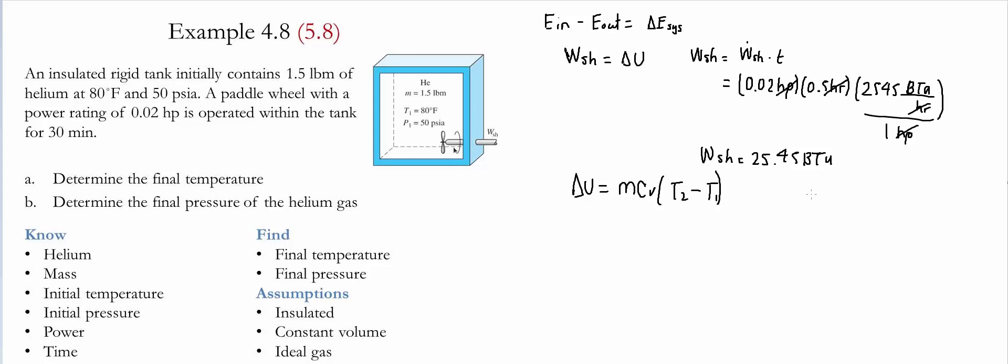The information that is provided, we have a mass of 1.5 pound mass and the value for Cv in this particular case. If we go to the table, we find it to be 0.753 BTU pound mass rankine. So if we make these two values equal to each other and we solve for T2, we see that T2 is simply going to be the work done by the shaft divided by m*Cv plus T1. And then if we substitute all these values...